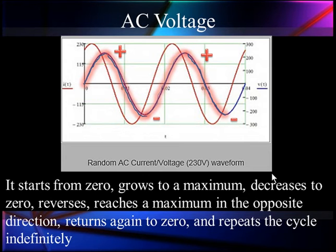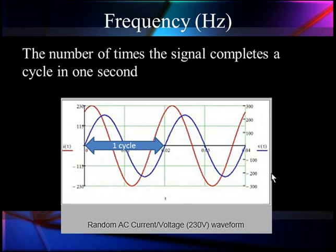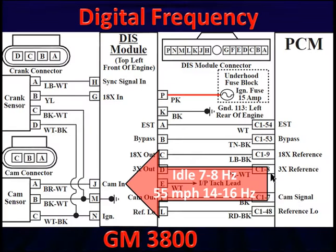We're going to use specialized functions of this in the automobile. The number of times a signal completes one cycle defines frequency. For standard AC, it starts at zero, goes to a maximum, comes through zero, goes to a max negative, comes back to zero — that's one cycle. We count the number of times this happens per second. There are other ways we measure frequency, but this is the common one.